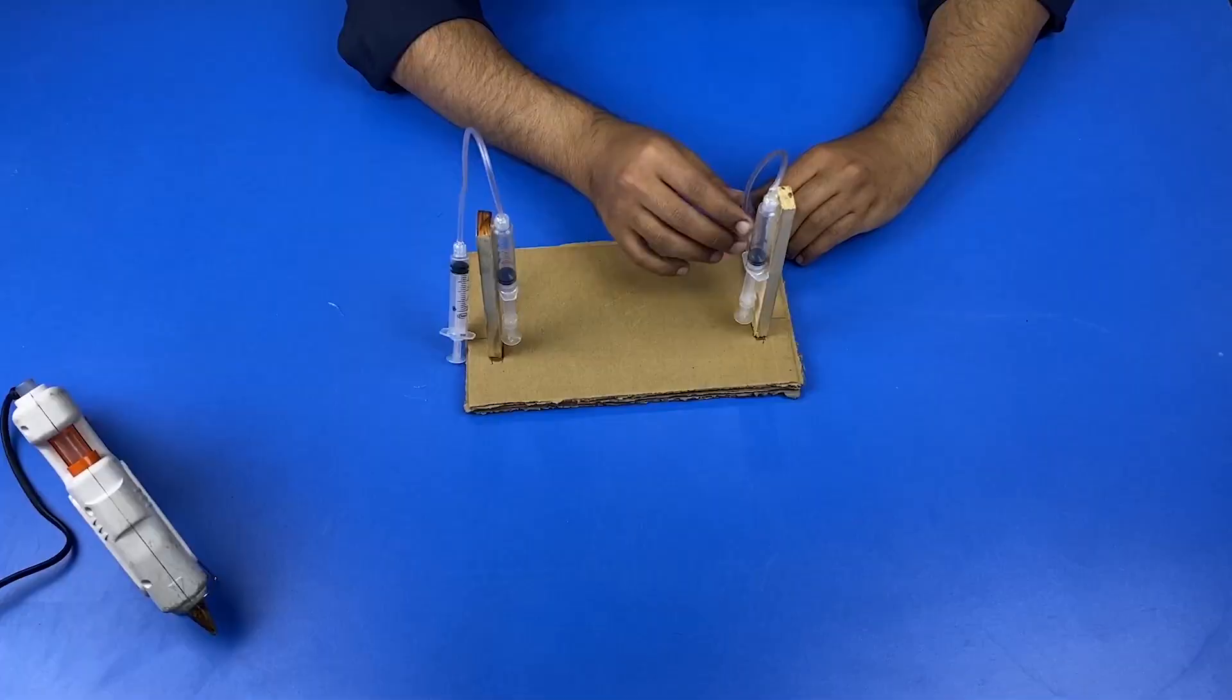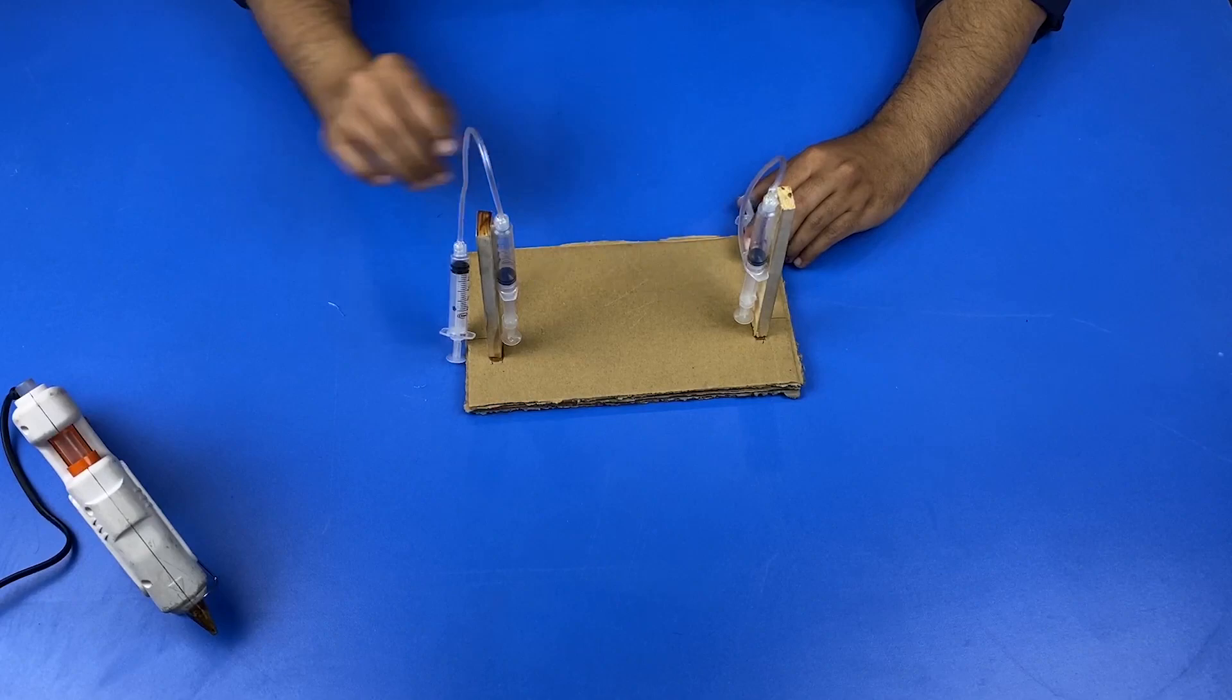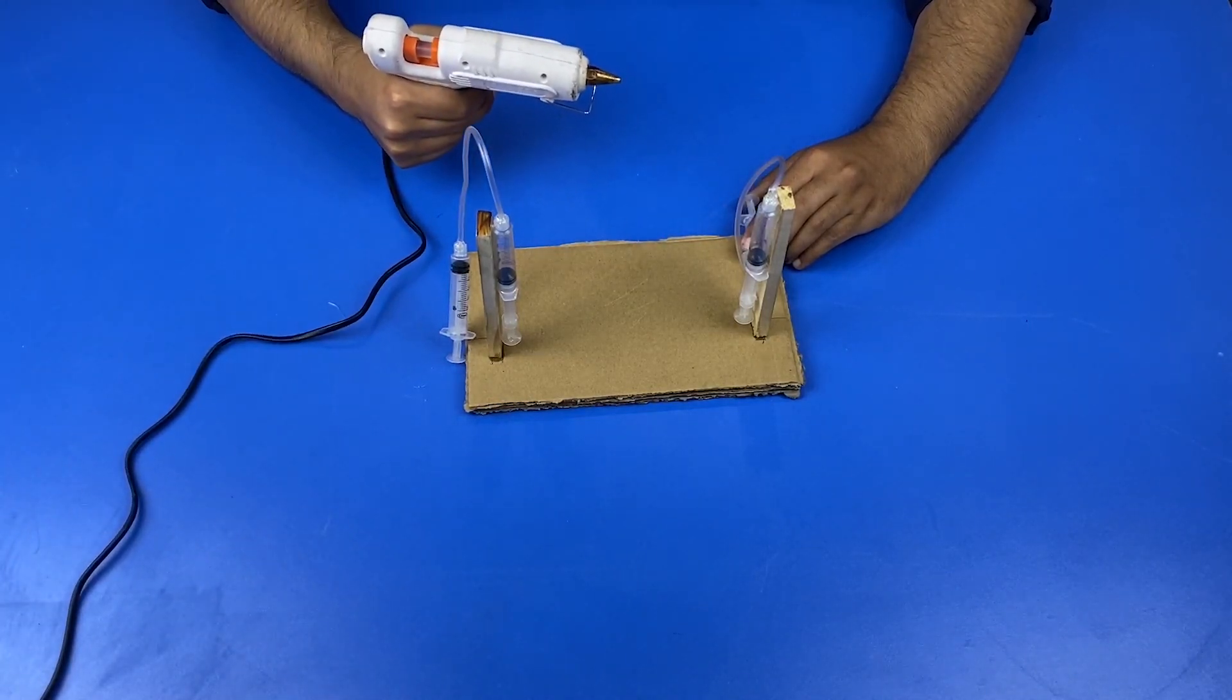After sticking the sticks, Daniel applies super glue to the sides of the cardboard to place two syringes one by one on the cardboard.